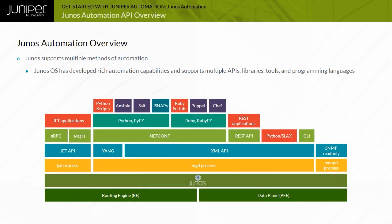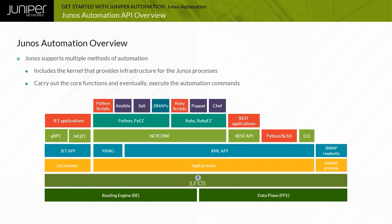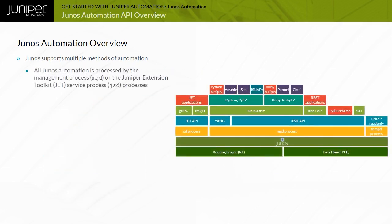The different layers of the Junos automation stack and the protocols and languages that Junos OS supports for automation are provided just above the routing engine. In the packet forwarding engine layer sits the Junos OS, which includes the kernel that provides infrastructure for the Junos processes. These processes carry out the core functions of the Junos OS. When you automate a Junos device, it is these processes that eventually execute the automation commands.